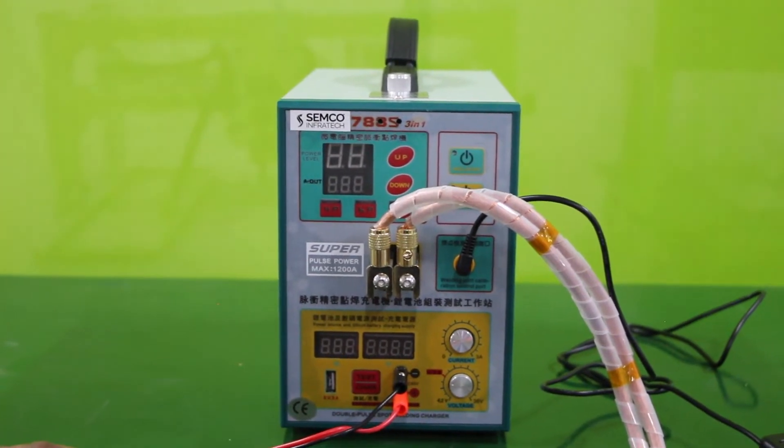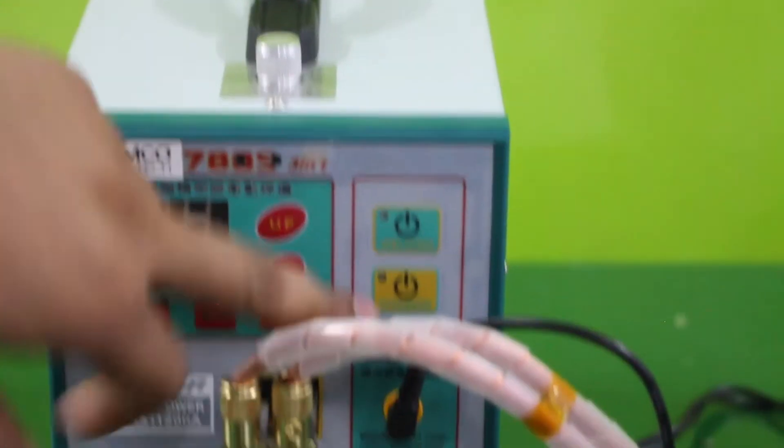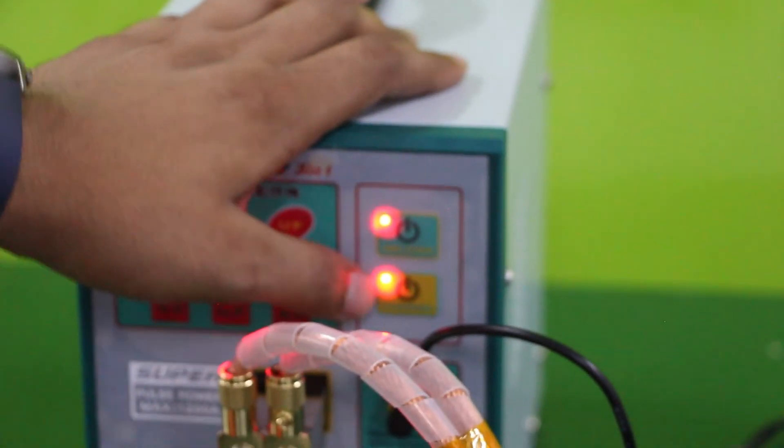Now comes to the machine's practical work. Here we can see two switches: the first is for welding and the second is for charging. When we press the welding switch, our welding will start and we can begin welding. The second switch is for charging. When we press this, we can see the amperage and voltage.